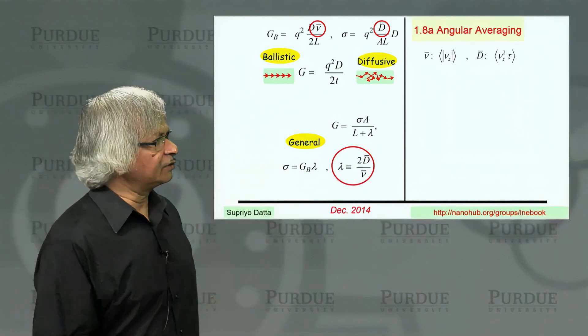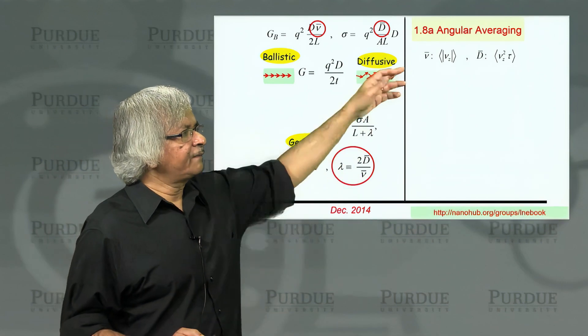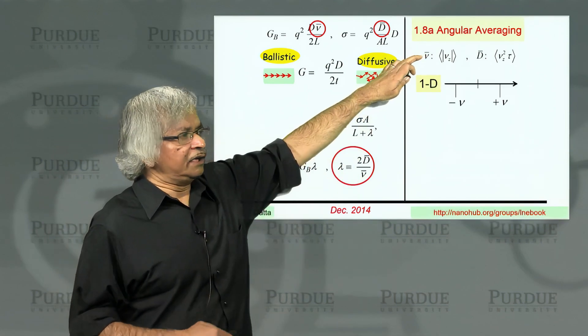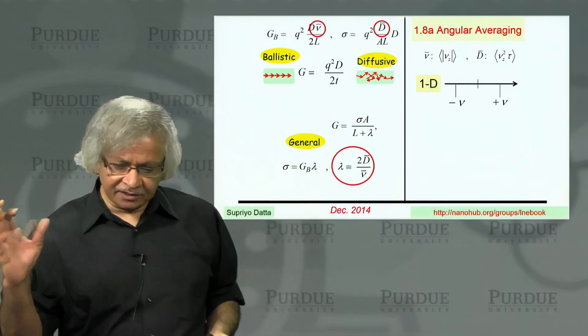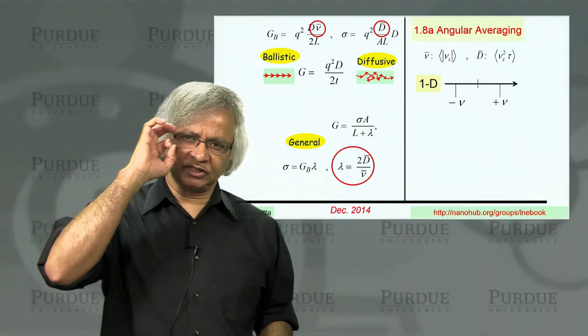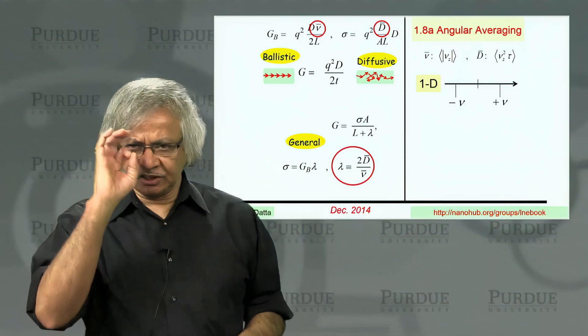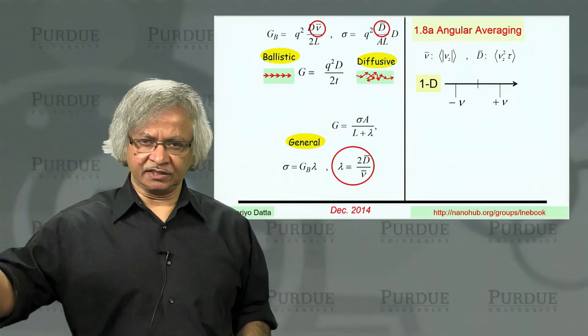So what we'll do in this lecture is we'll talk a little more about what these two quantities are, this d bar and v bar. The v bar that entered the ballistic conductance, the d bar that entered the conductivity, and this lambda, which is this ratio of d bar to v bar, because this bar indicates there is this averaging involved here. So let's start with the simplest case, that is a 1D conductor.